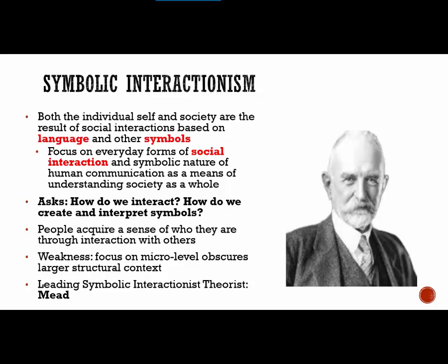Although I'm going over symbolic interactionism quickly as an introduction, we will be spending a lot of time on this framework in upcoming weeks. A weakness of symbolic interactionism is that because it's micro-level and focused on how people understand themselves and others through interactions, it obscures and overlooks the role of larger structural context — the focus of both macro sociological frameworks. It doesn't acknowledge the role that larger societal institutions play, and those frameworks can impact interaction. The leading symbolic interactionist is George Herbert Mead, whose name we will spend a lot of time on in chapter four. He was interested in how people develop a sense of self through their interactions and relationships with others.